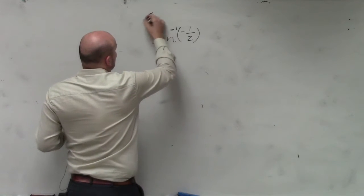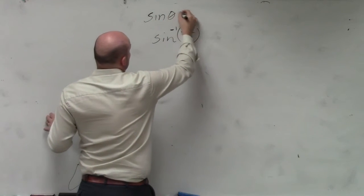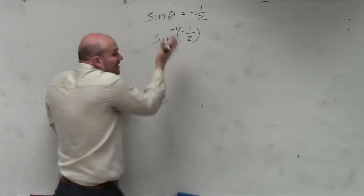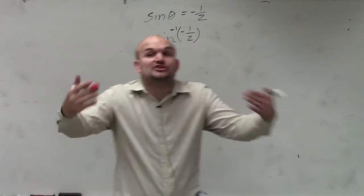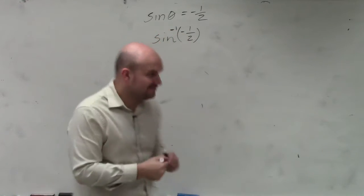If you guys remember, if we had sine of some angle is equal to negative 1 half, how do we figure out what that angle is? Remember inverse operations. To undo sine, you have to take the sine inverse.